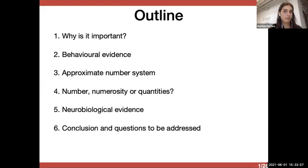So just for a little outline, I will start reasoning on why this is important, speak about behavioral evidence, what is the approximate number system, and something around this debate on if we are speaking about numbers, numerosity or quantities, something about the neurobiological evidence, and then some final comments.